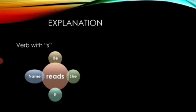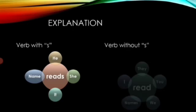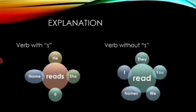Again, to form the simple present tense, for they, you, we, names, and I, we use the original form of the verb. They, you, we, I, and names don't love 's'.